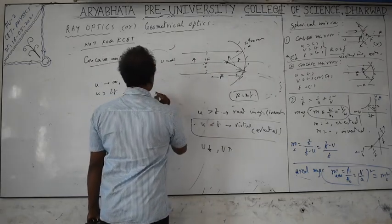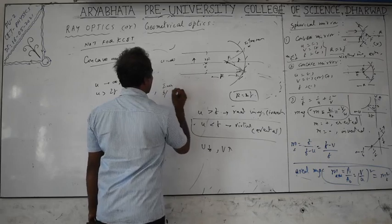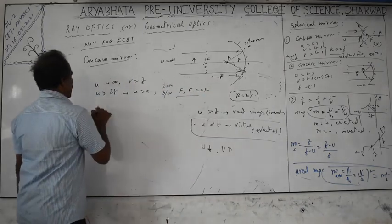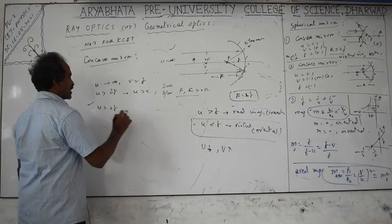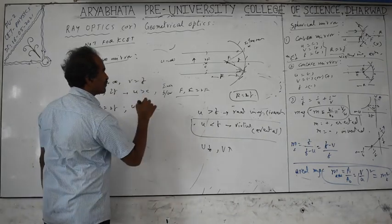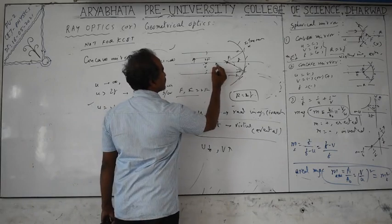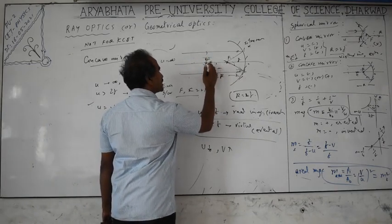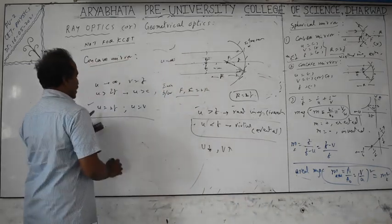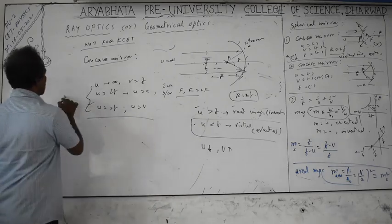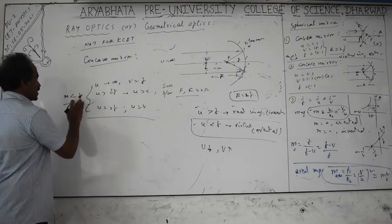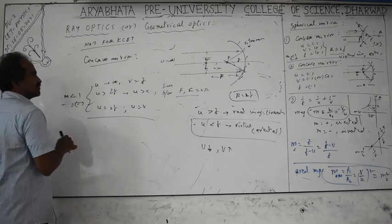When u is greater than 2f, the image is between f and 2f — a real, inverted, diminished image with magnification less than 1. When u equals 2f, the image is also at 2f — a real, inverted image of the same size as the object, magnification equals minus 1. When u is between f and 2f, magnification is less than minus 1, so the image is real, inverted, and magnified (size greater than the object).